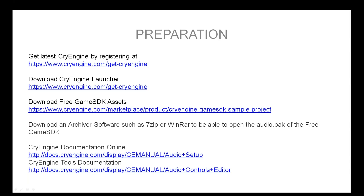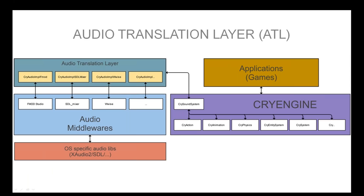I will use the CryEngine latest launcher version to show in-game elements. I'll be using the free Game SDK, which is a package of free assets you can download from the marketplace. It's very helpful to open various pack files using an archiver software such as 7-Zip. All of this is also available in the CryEngine documentation online at cryengine.com under the documentation tab.